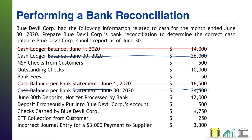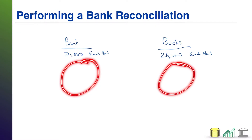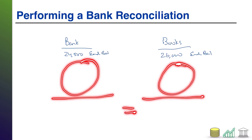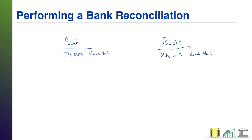The process of performing a bank reconciliation involves making adjustments to each of these ending balances such that you come to a common ending balance on both sides — that is your true balance once you combine the information from both the bank and the company. There are numerous reasons you can have discrepancies. I encourage students to start with the errors, because errors can affect other calculations you do on the bank side or book side.